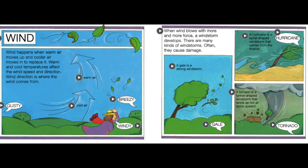Wind happens when warm air moves up and cooler air moves in to replace it. Warm and cool temperatures affect the wind speed and direction. Wind direction is where the wind comes from. When wind blows with more and more force, a windstorm develops. A gale is a strong wind storm. A hurricane is a spiral-shaped wind storm that comes from the tropics. A tornado is a funnel-shaped wind storm that twists as hot air spins upward.